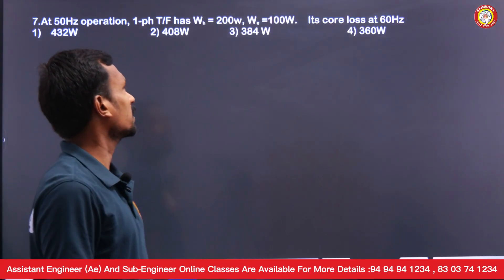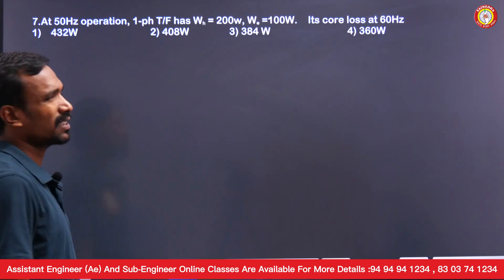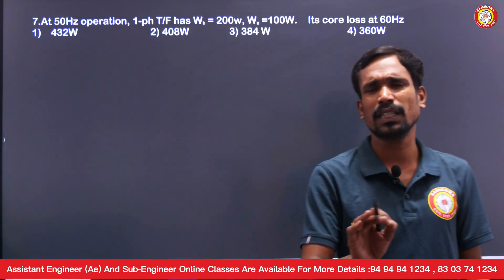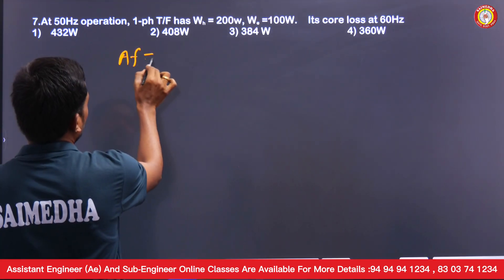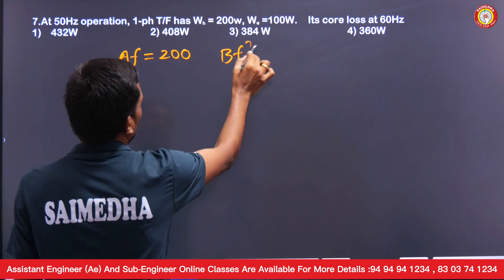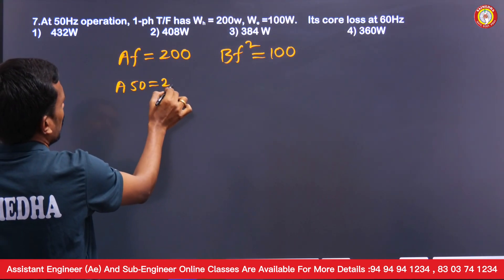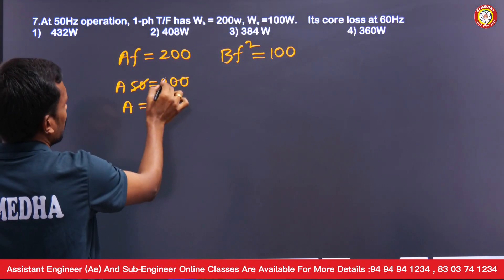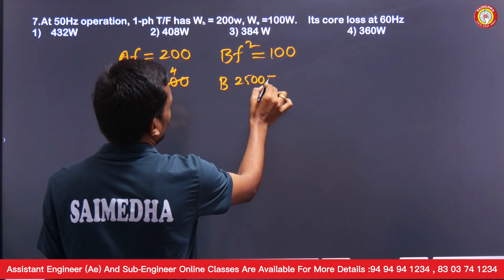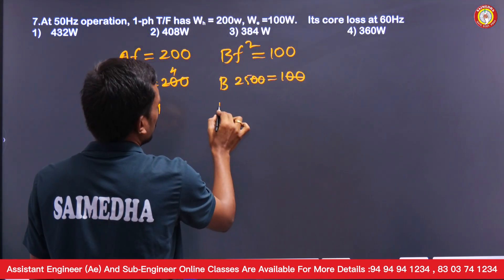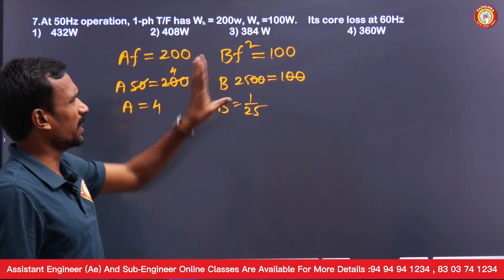At 50 Hz, a single phase transformer has hysteresis losses of 200W and eddy current losses of 100W — that is the core loss. At 60 Hz, since nothing else is mentioned, we consider V/f constant. With V/f constant, hysteresis loss = a·f and eddy current loss = b·f². So a×50 = 200, giving a = 4, and b×50² = 100, giving b = 1/25.